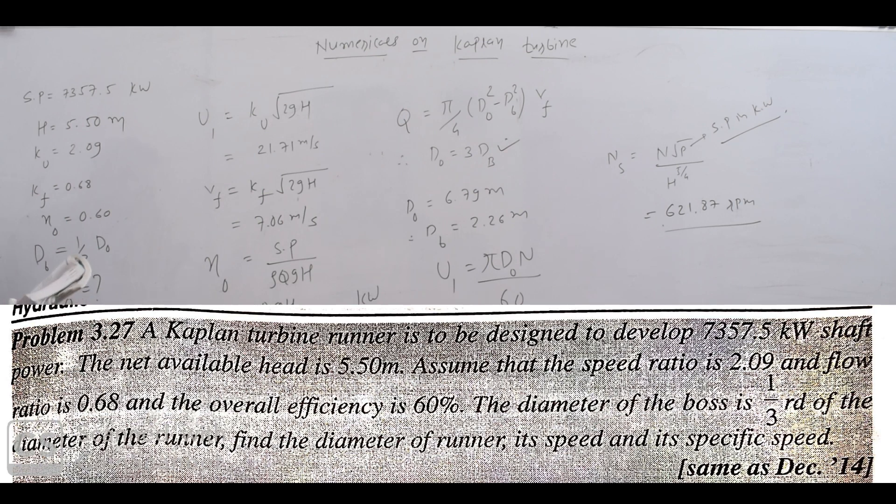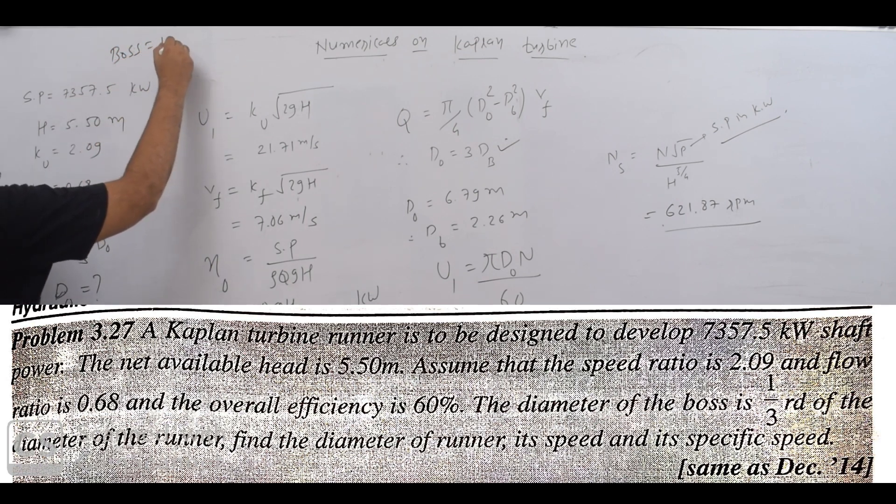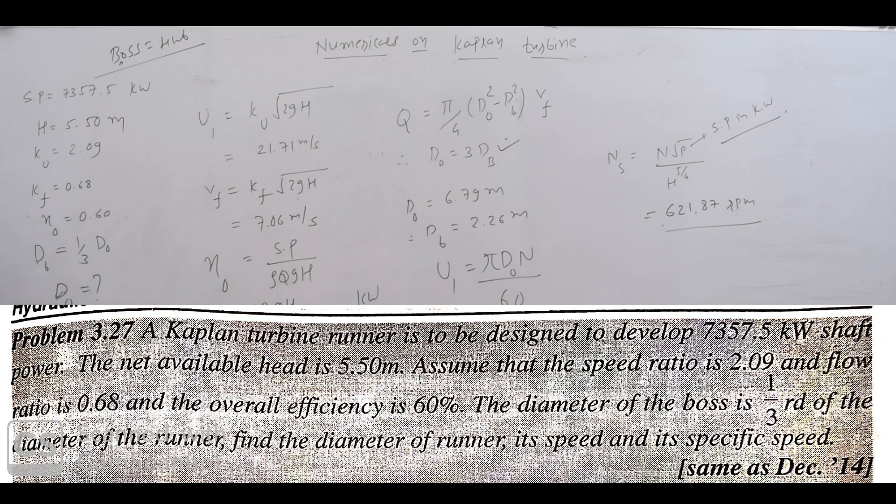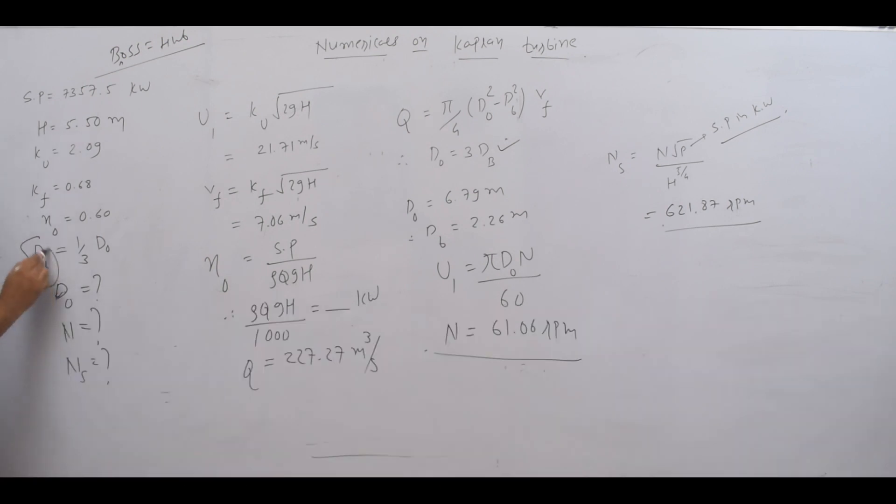The diameter of the boss (or hub) db is one third of the diameter of runner, the outer diameter do. So db equals one third of do.